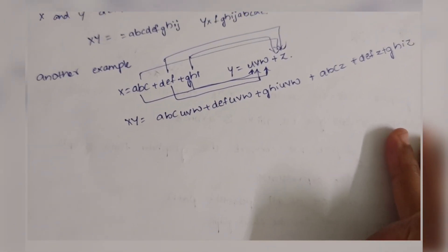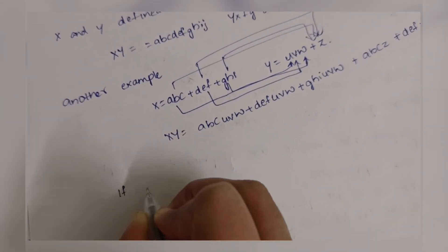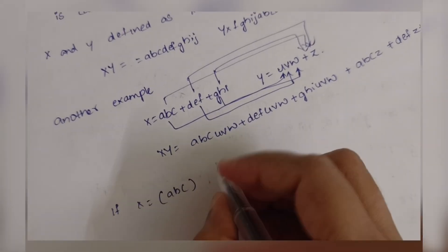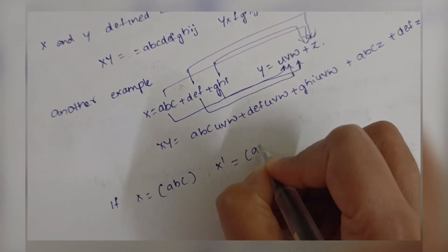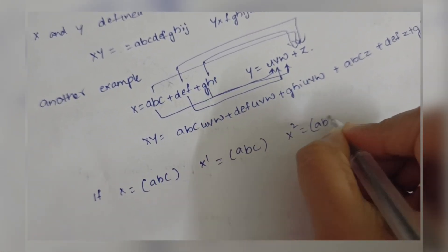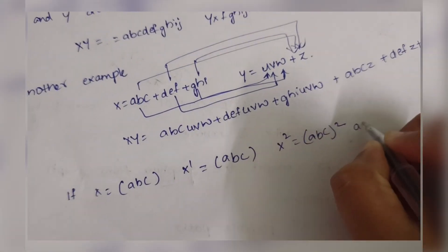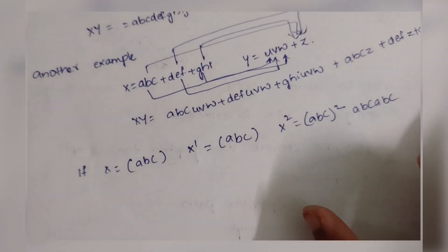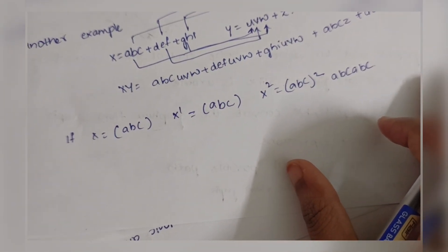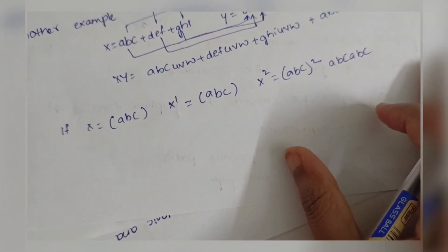Another example: if X = A B C, then X squared equals (A B C)², which is nothing but A B C A B C. The path product is not commutative — that is, X Y does not necessarily equal Y X.